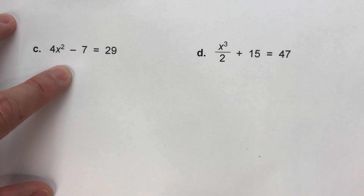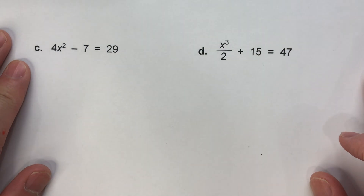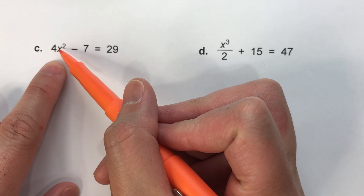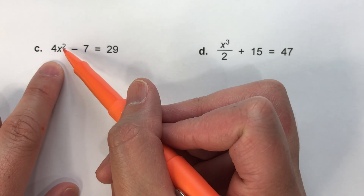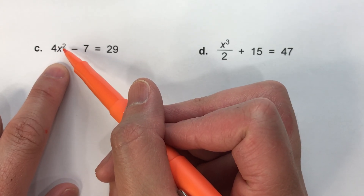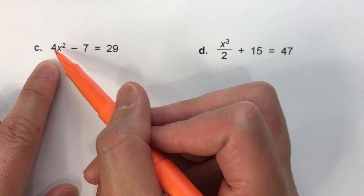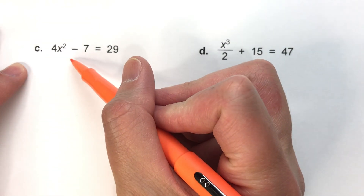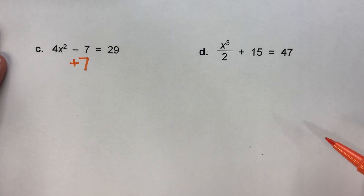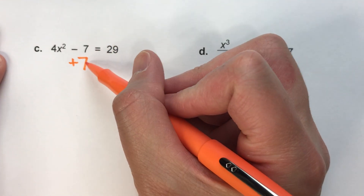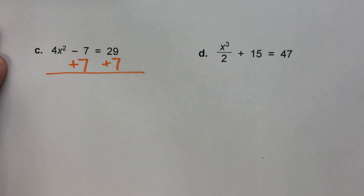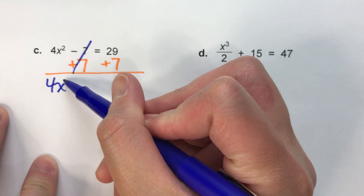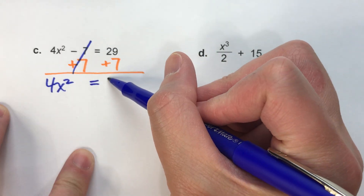Let's do a couple more that are harder. Here's one: 4x squared minus 7 equals 29. To undo this we work in the opposite order of the order of operations. We started with x, first they squared it, then multiplied by 4, then subtracted 7 to get 29. That minus 7 was the last thing they did, so it's the first thing we undo. So we add 7 to both sides — the 7s undo each other.